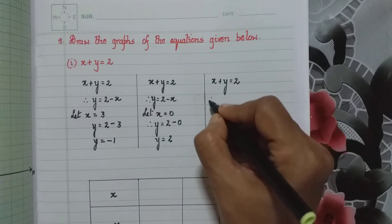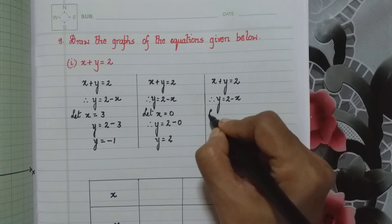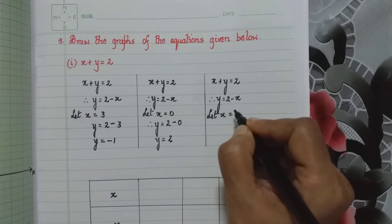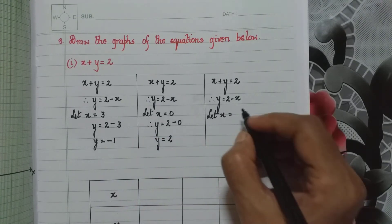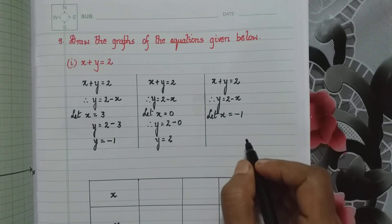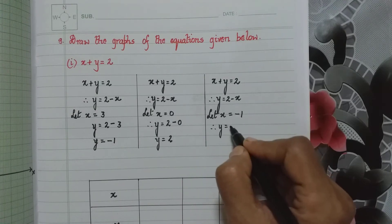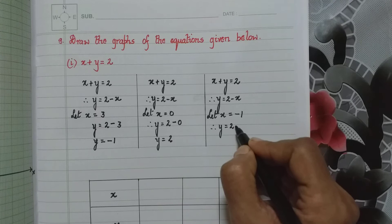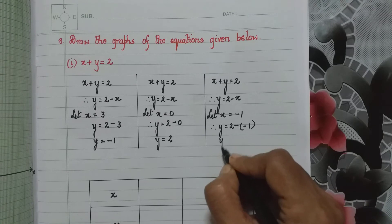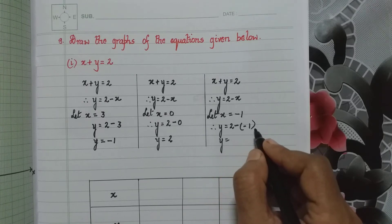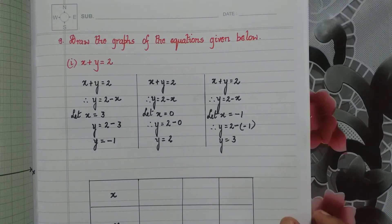Again x plus y equals 2, therefore y is equal to 2 minus x. Now we take x as a negative value. Say x equals minus 1. Therefore y is equal to 2 minus minus 1, which is 2 plus 1, which is 3. Therefore y is equal to 3.